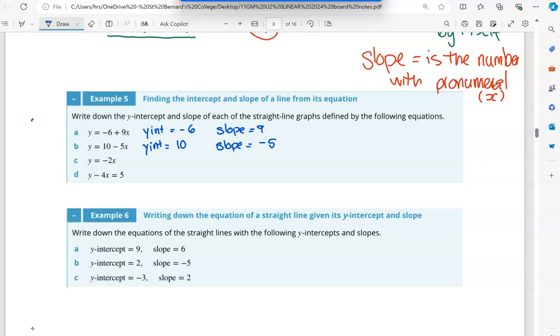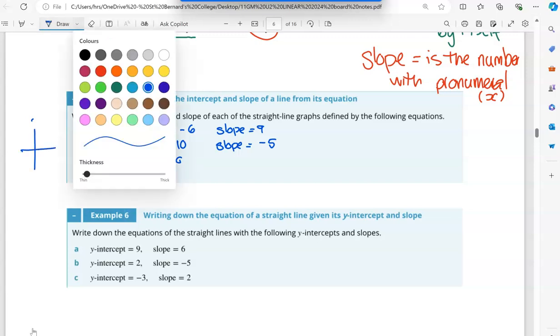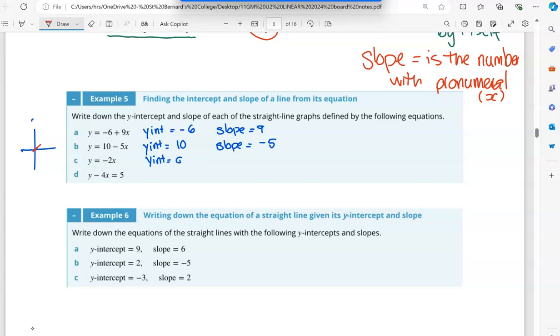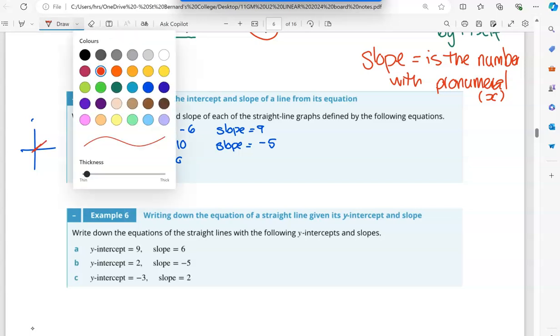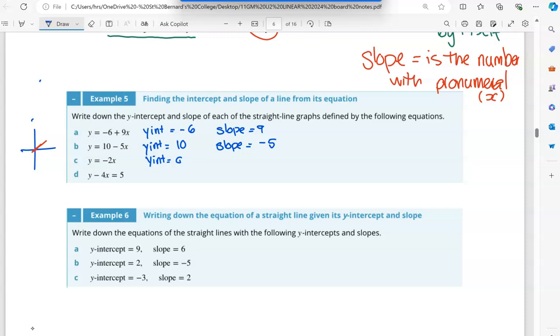So we know that one would be going downwards, left to right. Now with this one, this Y intercept is zero. There is no, it goes through zero. Even though the number's not there, it actually cuts through that center of the graph. If you think about it, the graph here, it's cutting through there like that. And the slope here would be negative two.